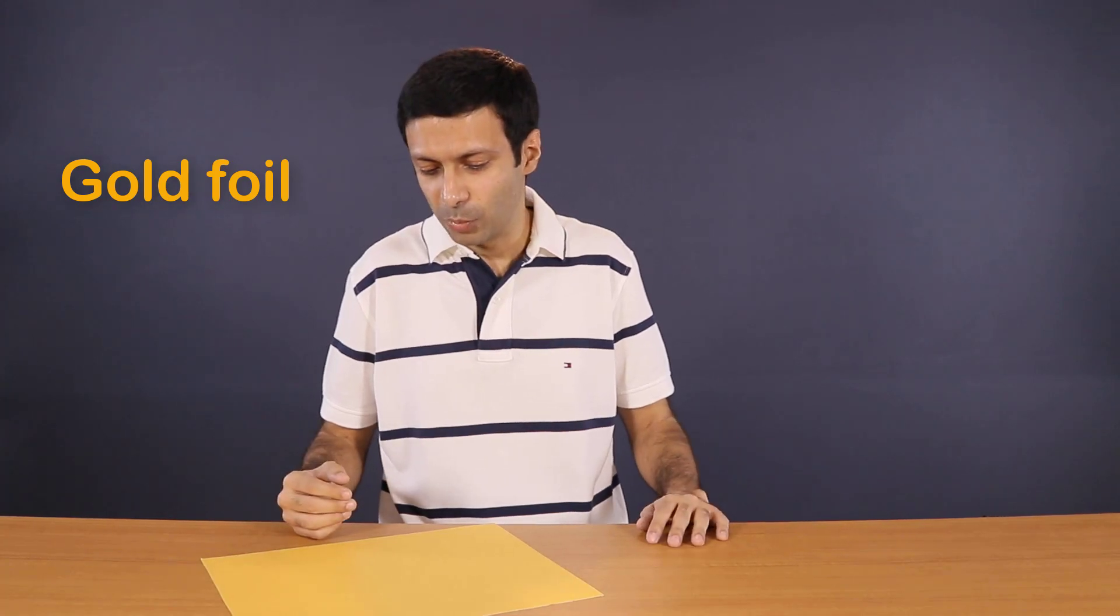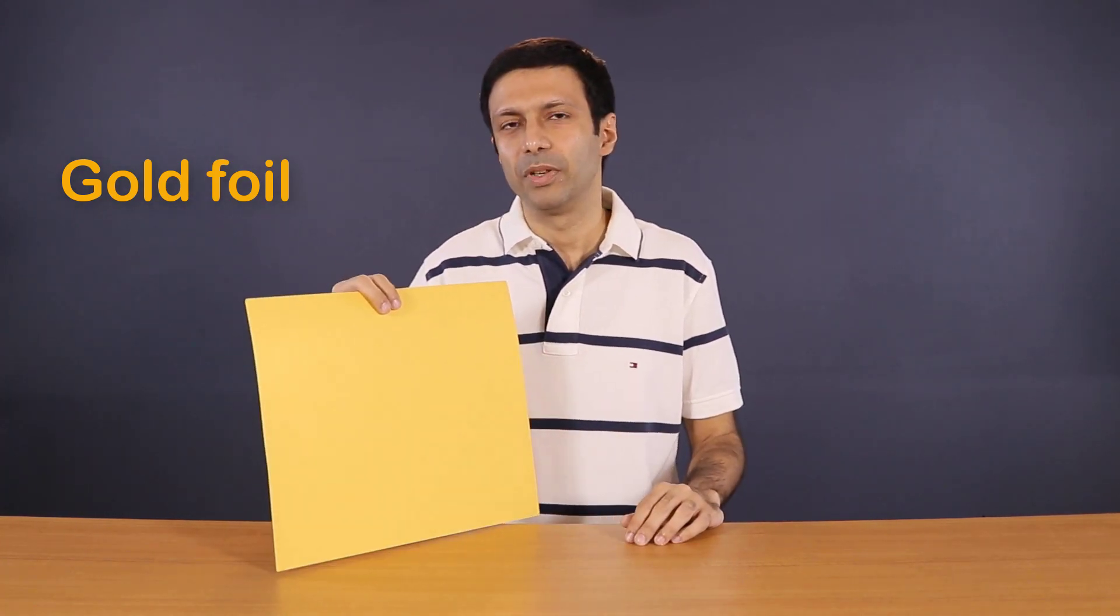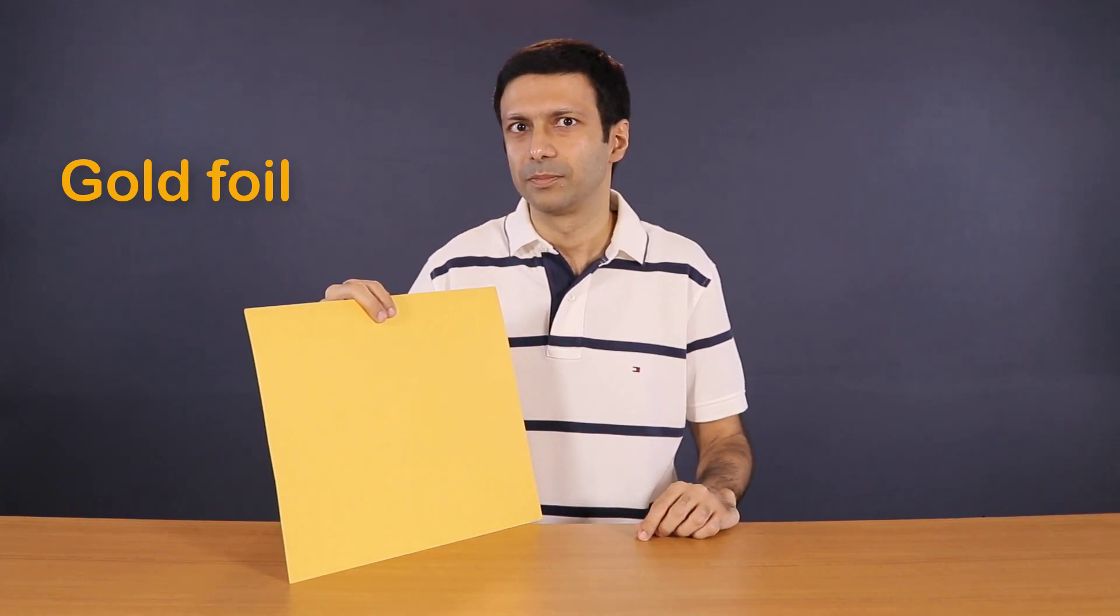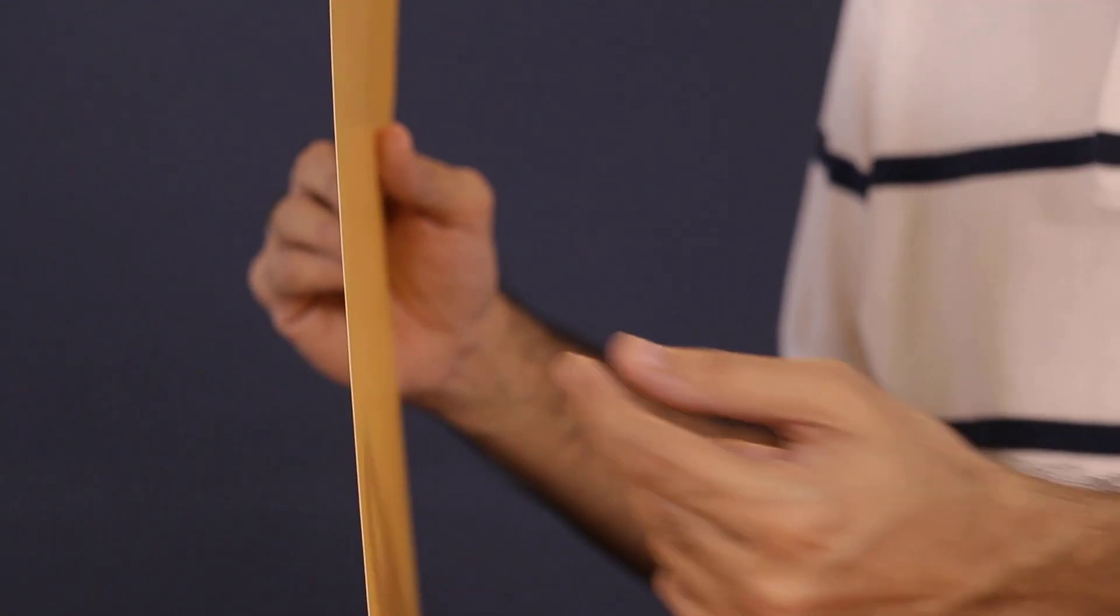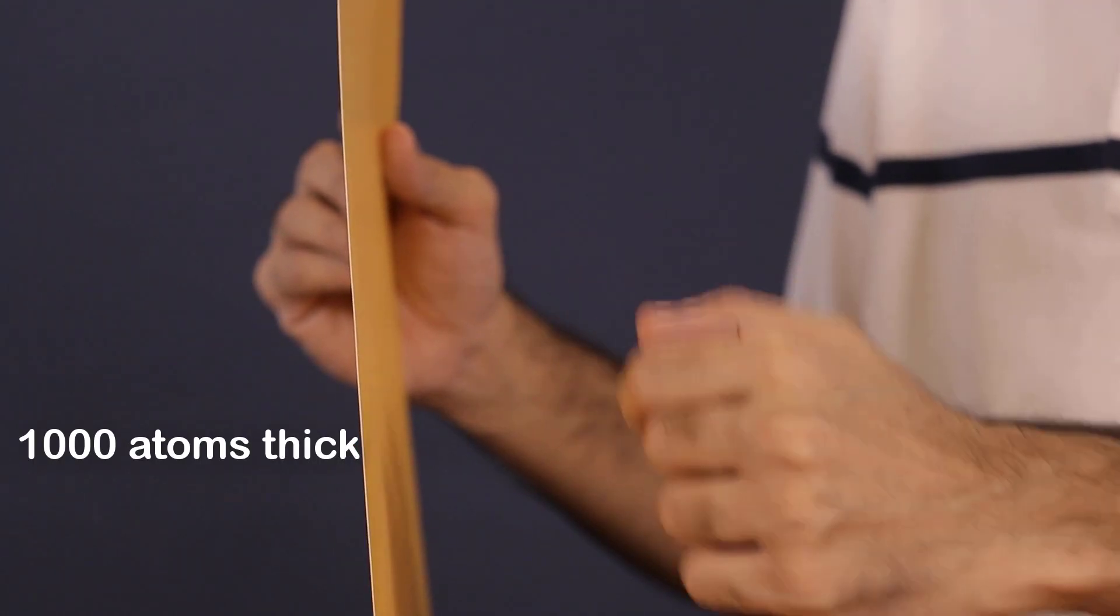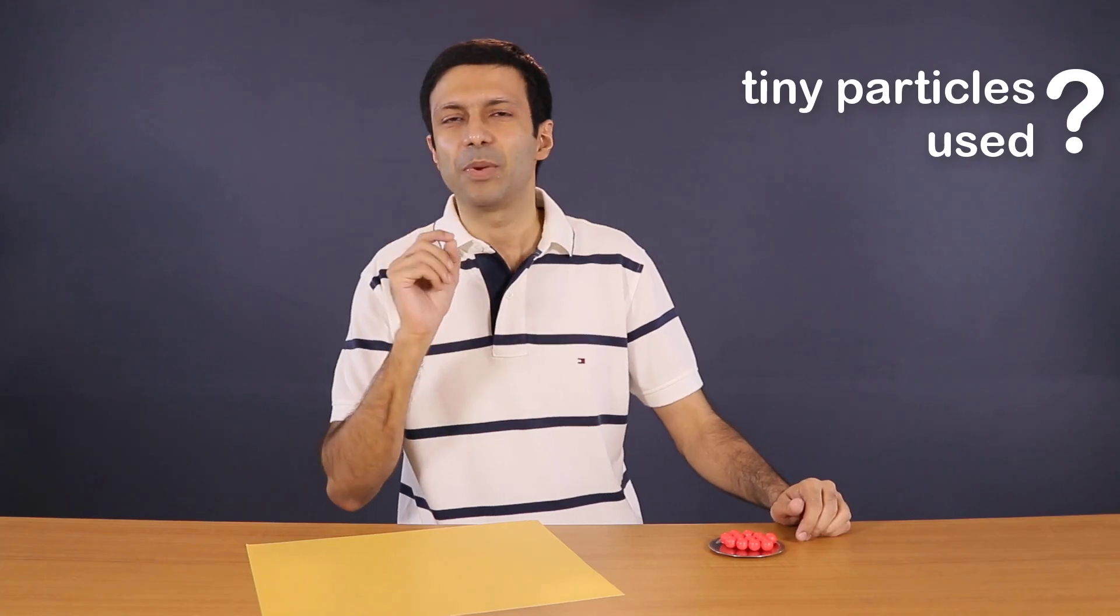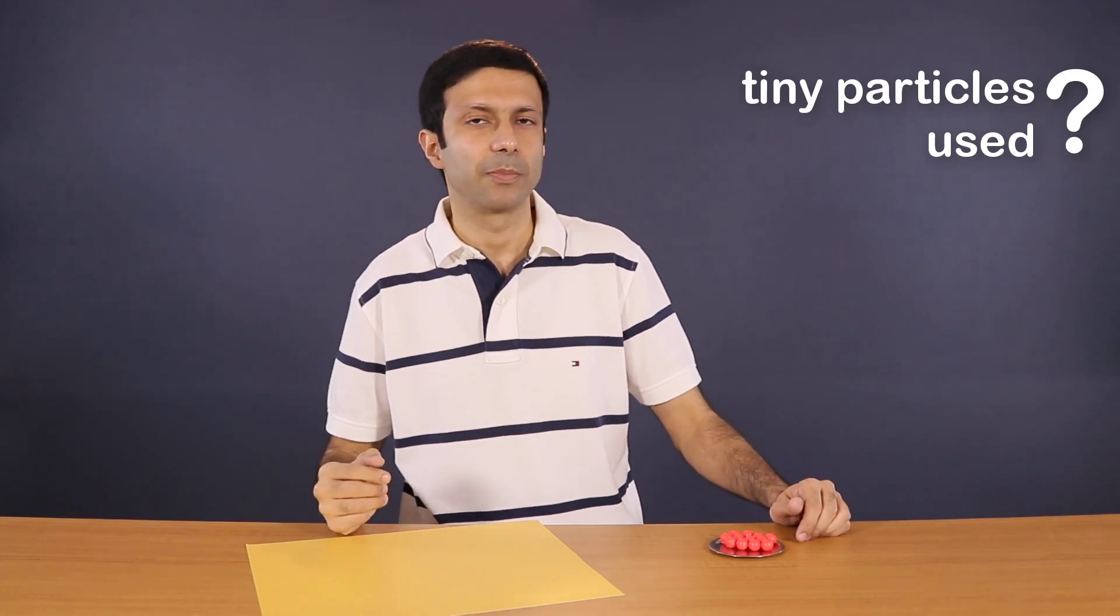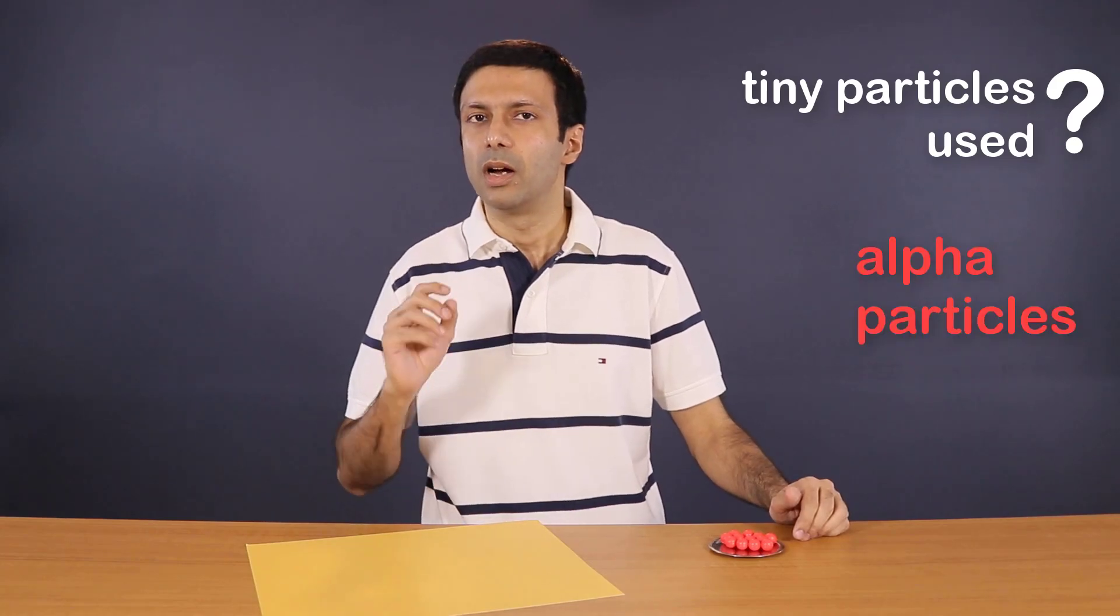But he used a gold foil. Because it can be beaten into an even thinner sheet than aluminum, since gold is the most malleable metal. Now I don't have a gold foil with me, so I'm going to use this golden paper instead to represent the gold foil. Now the actual gold foil is much thinner than this golden paper. The thickness of the real gold foil is only about 1000 atoms. Now what are the tiny particles that were used during the experiment?